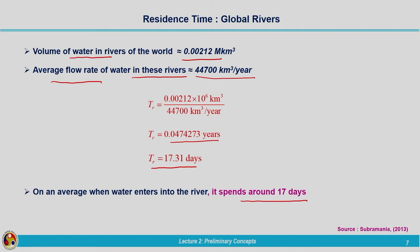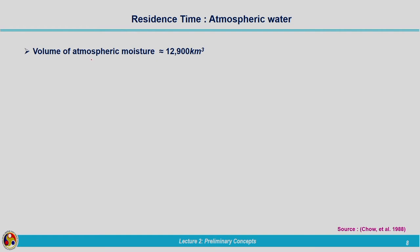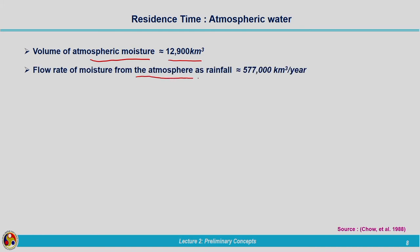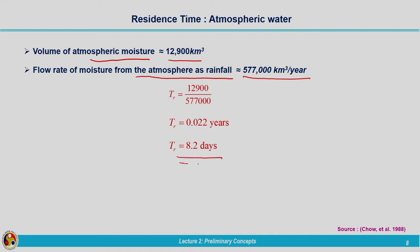What is the corresponding residence time for atmospheric water? The volume of atmospheric moisture is approximately 12,900 cubic kilometres, and the flow rate of moisture from the atmosphere in the form of rainfall is approximately 577,000 cubic kilometres per year. Calculating this residence time gives approximately 0.022 years, which converts to 8.2 days. So water is present in the atmosphere in the form of water vapour for only 8.2 days — a very small duration. That is the reason why we cannot forecast rainfall for a long time.